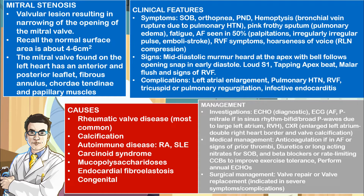Management may be medical or surgical. Medical management includes anticoagulation if the patient is in atrial fibrillation or has signs of prior thrombus formation. Diuretics or long-acting nitrates can be used for shortness of breath, while beta blockers or rate-limiting calcium channel blockers can improve exercise tolerance. Annual echocardiographs should also be performed. Surgical management, indicated for severe symptoms or complications, includes valve repair or valve replacement.